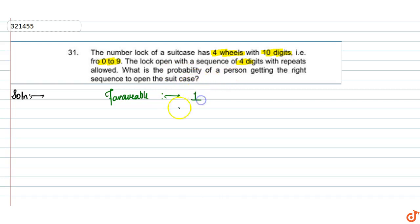So here the favorable outcome is one and total possibilities. Here is the suitcase. The lock has four wheels and the four digits have 10, 10 is 0 to 9.